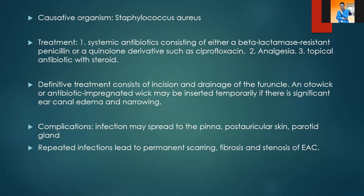Once you've made the diagnosis of furuncosis, the causative agent is Staphylococcus aureus. Treatment includes systemic antibiotics consisting of beta-lactamase-resistant penicillin such as amoxiclav or flucloxacillin, or quinolones such as ciprofloxacin. We also give the patient analgesia and topical antibiotic with a steroid — you can give an ear drop. In cases where the furuncle is ready and more fluctuant, we go ahead and do incision and drainage.